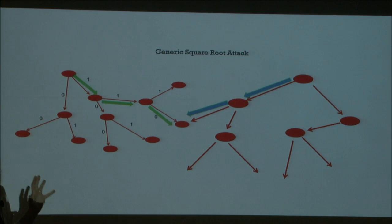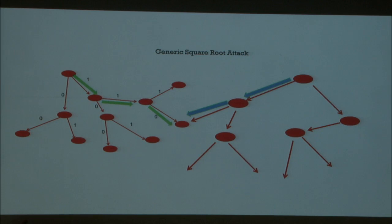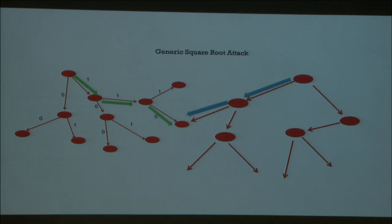In a generic square root attack, if you're trying to find a path between two nodes, you start walking from both nodes, keeping track of your path — like Hansel and Gretel dropping breadcrumbs. You wait until you collide, and when you collide, you've found a path between the two nodes. This relates to our lecture yesterday about polynomial time running times versus the exponential time an attacker needs.